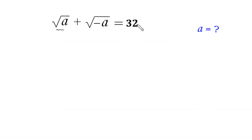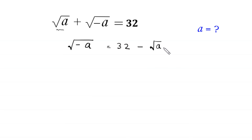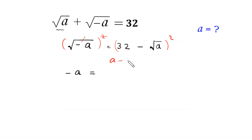Let's start by moving √a to the right-hand side. So √(-a) = 32 - √a. Now we square both sides of this equation. On the left-hand side we are left with -a, and on the right we apply the algebraic identity (a - b)² = a² - 2ab + b².